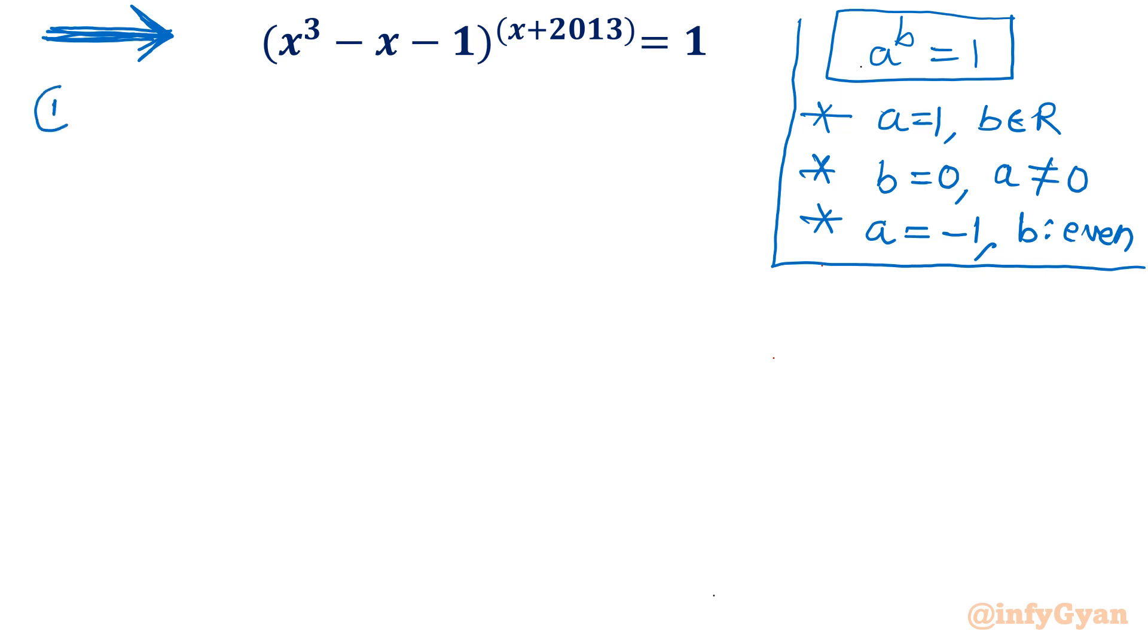So let's apply the three conditions. Point number 1, x cube minus x minus 1 equal to 1, and power should be x plus 2013. It should be real. So first we will solve the cubic polynomial. Whatever we will get, we will put over here to check whether it is real or not. That means complex solutions are rejected. Only real solutions are accepted.